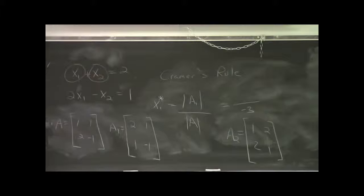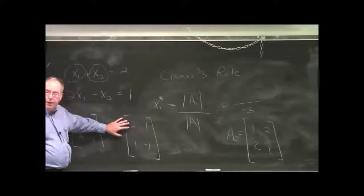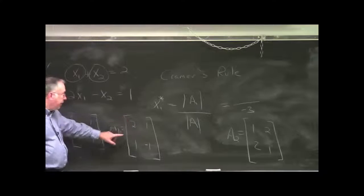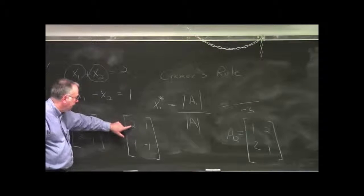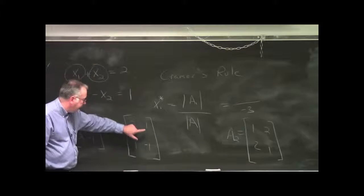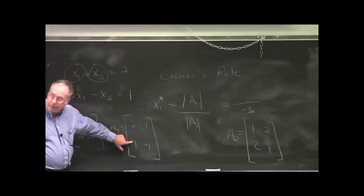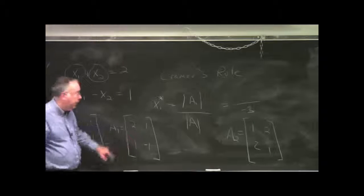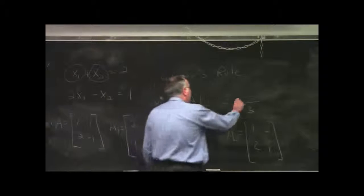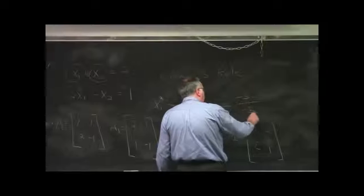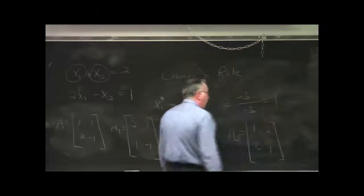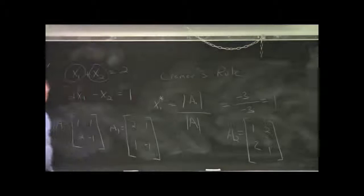What is the determinant of A sub 1? What is the determinant of this matrix? Negative 3. By coincidence, it's the same. It's 2 times minus 1, that's minus 2, minus 1 times 1. 2 minus 1 is negative 3. So we have negative 3 over negative 3. x1 star is 1, which is what we found before.